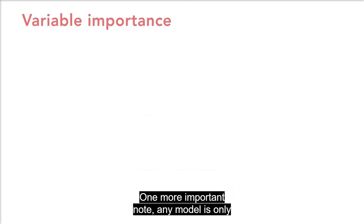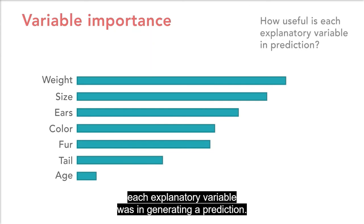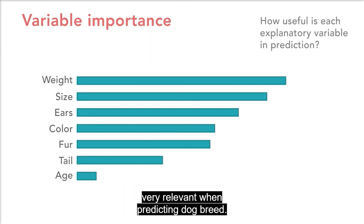One more important note, any model is only as good as its explanatory variables. The variable importance chart tells us how useful each explanatory variable was in generating a prediction. For example, we can see here that age is not very relevant when predicting dog breed.